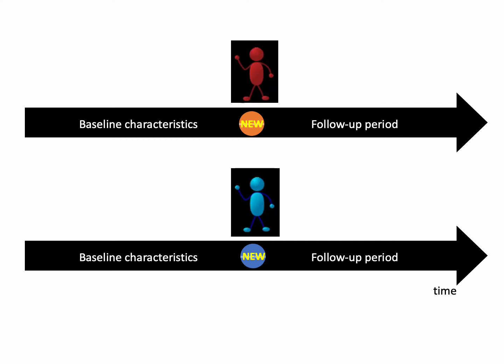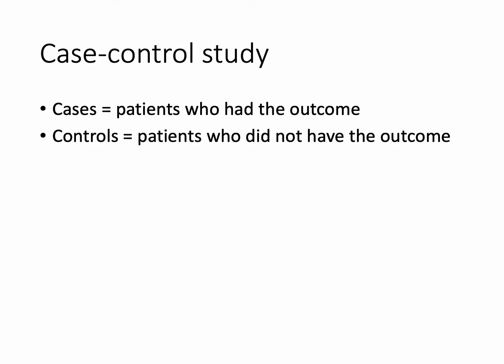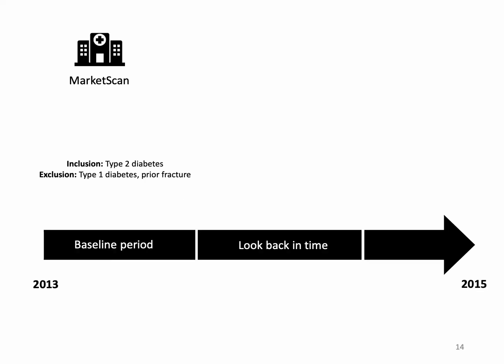Now moving on to case control studies — this diagram will help once I contrast it with what a similar study would look like as a case control. With a case control study, you identify cases (people who had the outcome) and controls (people who did not), then identify the exposure status preceding. In this example, we'd identify all individuals in the database who had a fracture and those who did not, then see how often each group received an SGLT2 inhibitor.